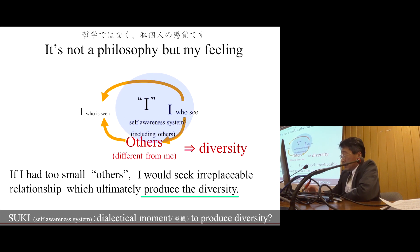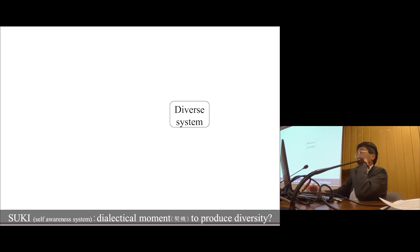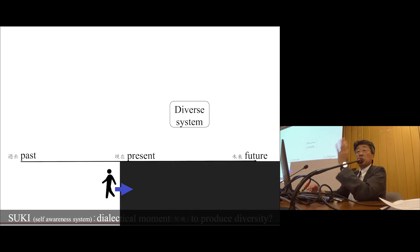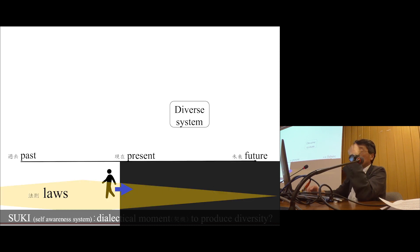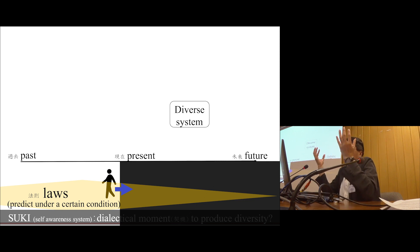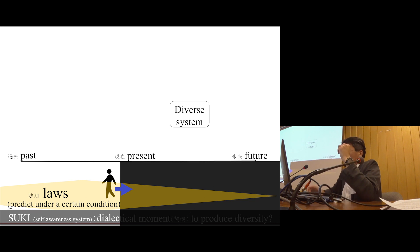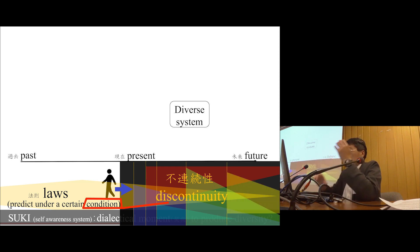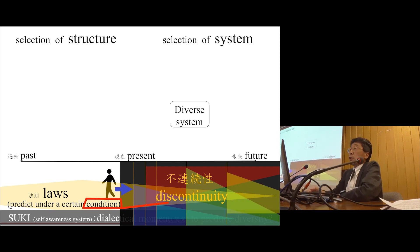I think the suki self-awareness system is a decisive moment to produce diversity. So I think about the diverse system. We have no memory of the future, so we go backward to the future. We sometimes use rules. But rules predict the future only under certain conditions, and the condition is discontinuity. The environment is changing; it is continuous. So think about structures.